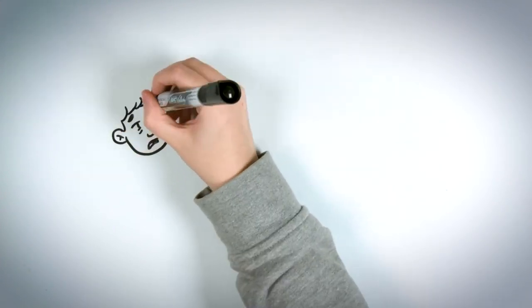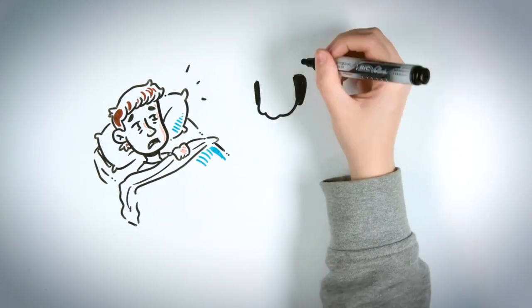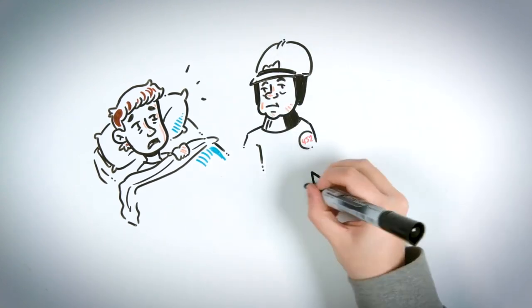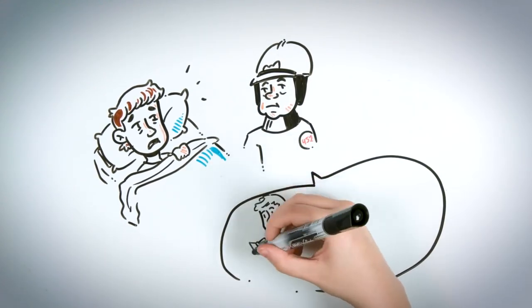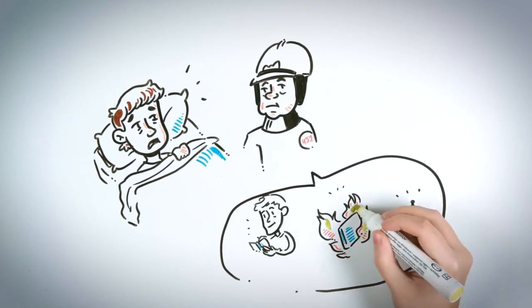The next morning, Montag wakes up sick and unable to go to work. His boss Captain Beatty hears about Montag's condition and decides to pay a visit to see how he's doing. Beatty tells him about the evolution of society and how the banning of books came about because of the independent thoughts they provoked in people.